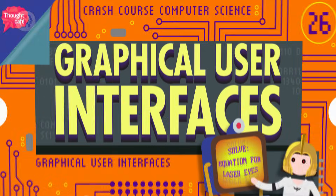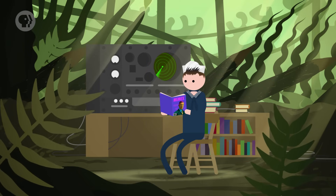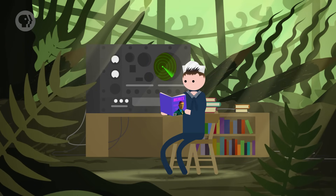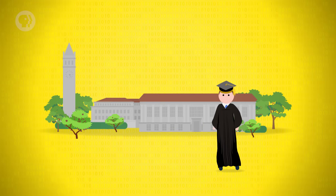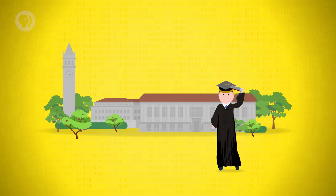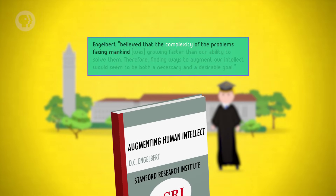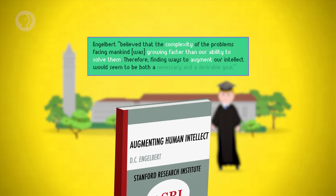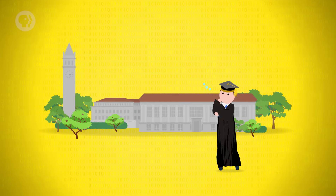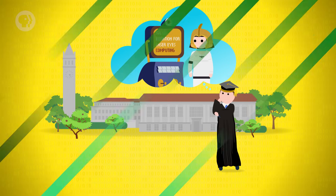Let's go to the Thought Bubble. During World War II, while Engelbart was stationed in the Philippines as a radar operator, he read Vannevar Bush's article on the Memex. These ideas inspired him, and when his Navy service ended, he returned to school, completing a PhD in 1955 at UC Berkeley. Heavily involved in the emerging computing scene, he collected his thoughts in a seminal 1962 report titled 'Augmenting Human Intellect.' Engelbart believed that the complexity of the problems facing mankind was growing faster than our ability to solve them, and therefore finding ways to augment our intellect would be both a necessary and desirable goal. He saw that computers could be useful beyond just automation, and be essential interactive tools for future knowledge workers to tackle complex problems.